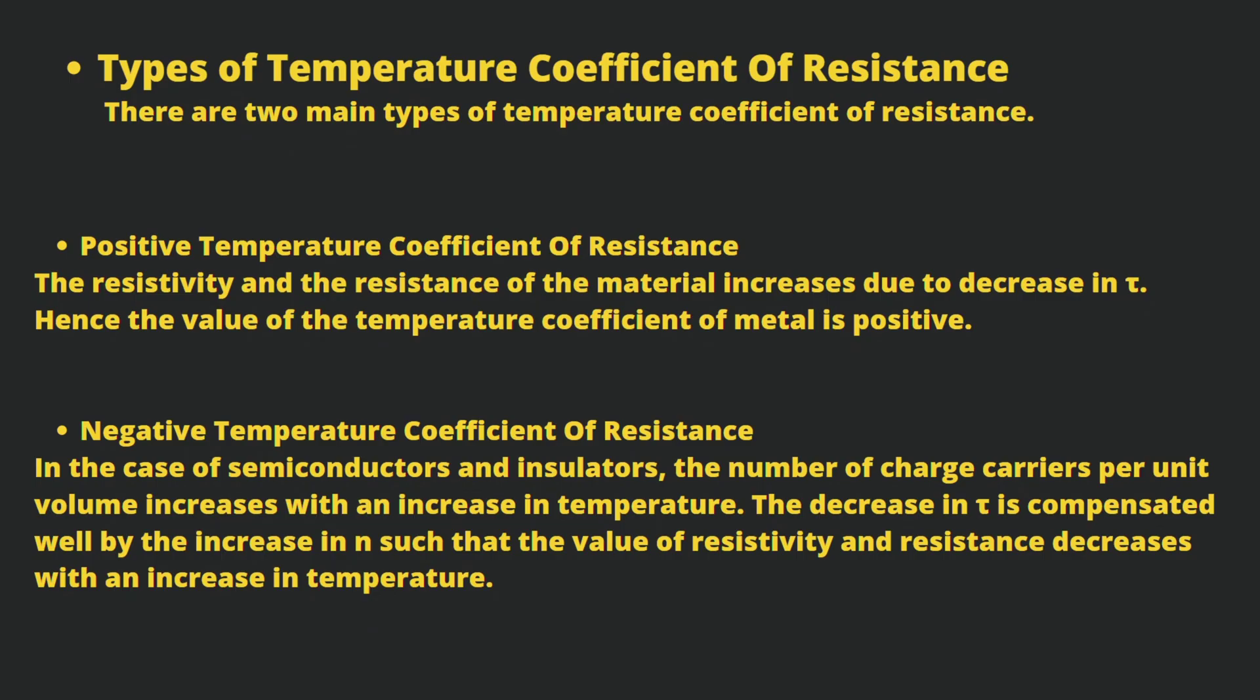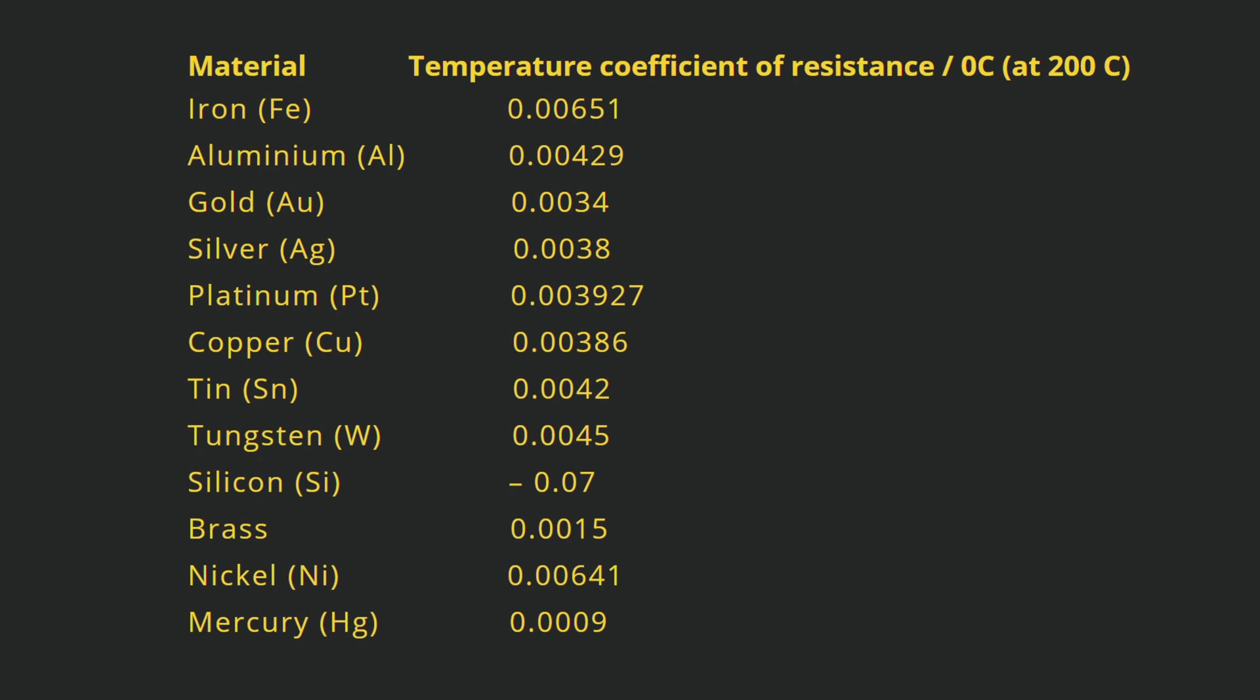There are two types of temperature coefficient: positive and negative. In the positive temperature coefficient, resistivity and resistance increase when their temperature is raised. The temperature coefficient of metal is positive. In negative temperature coefficient, resistivity and resistance decrease when their temperature is raised.